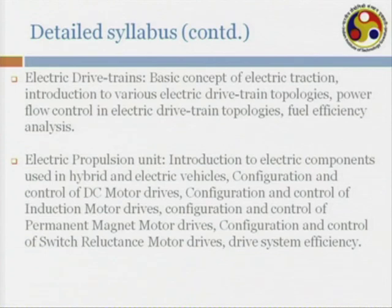We will then move on to the electric propulsion unit, where we would look at various kinds of electrical components that go into building an electric vehicle as well as a hybrid electric vehicle — specifically the type of machines used, whether DC machines or AC machines.